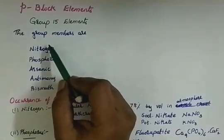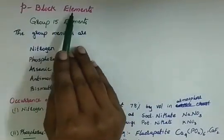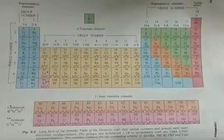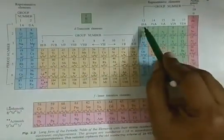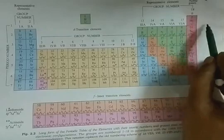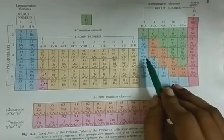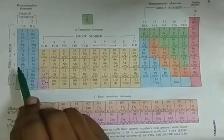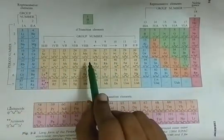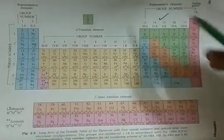Good morning students. Now we'll go to the new chapter, P-Block elements. In P-Block elements we have different groups as you see in the periodic table. Groups 13, 14, 15, 16, 17, and 18 all comprise the P-Block elements. We have also studied the S-Block — first and second groups — and third to twelfth groups are your D-Block elements, which we will read in the next semester. So in the periodic table, this is our P-Block.